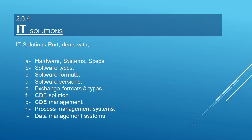The BIM Execution Plan also addresses IT solutions — for example, which hardware systems and specs to be used, which software types and versions to be used, which file formats and exchange formats to be used, which CDE solution to use, how and who will manage the CDE, how process management systems will work, and how data management systems will perform.